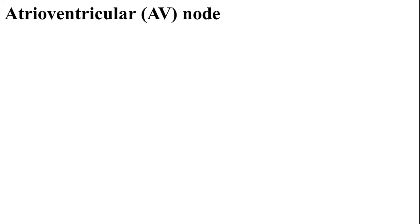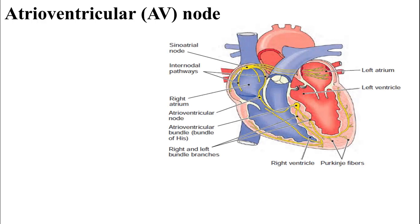In the cardiac conduction system, the atrioventricular node is a node located in the wall of the right atrium. It is part of the conduction system of the heart. The sinoatrial node is the natural pacemaker in the wall of the right atrium. Internodal pathways pass the impulse from the sinoatrial node toward the atrioventricular node.